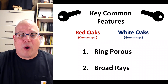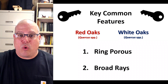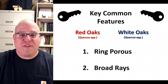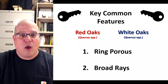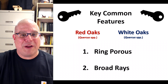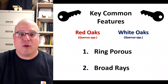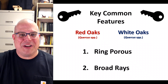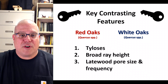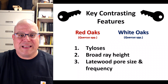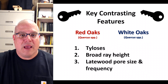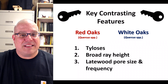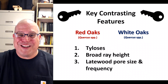We'll show you many features of red oak and white oak today, but let's start by previewing the most important ones — the ones you should commit to memory. Both woods are ring porous and have broad rays. Whenever you see the feature combination of ring porous and broad rays, you should immediately think of red oak and white oak. No other North American commercial woods have this combination. As for contrasting features that distinguish red oak from white oak, there are three important ones: tyloses, broad ray height, and late wood pore size and frequency. Are you ready to get started? Here we go!